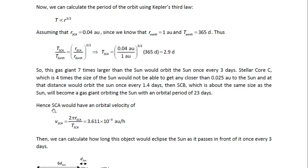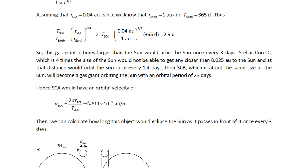So then stellar core A would have an orbital velocity, which is the circumference of its orbit, which is 2π times the radius of its orbit, divided by its period. And when we calculate that, we get 3.611 times 10 to the power of minus 3 AU per hour.